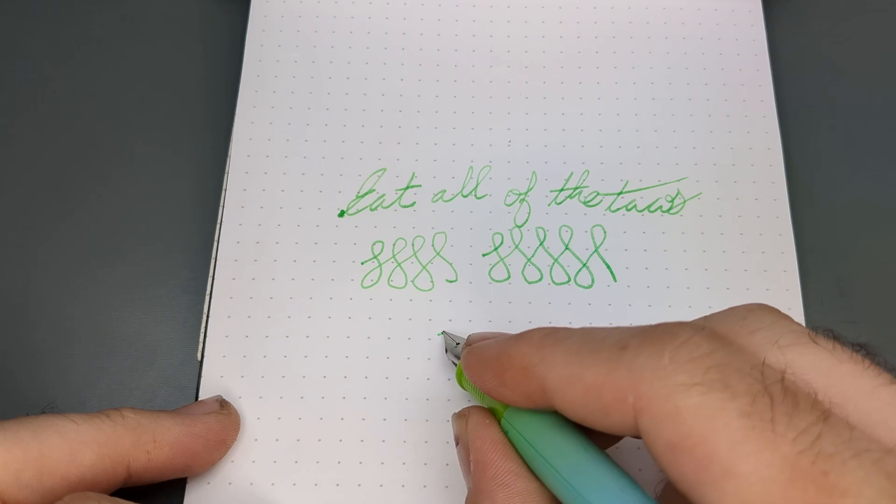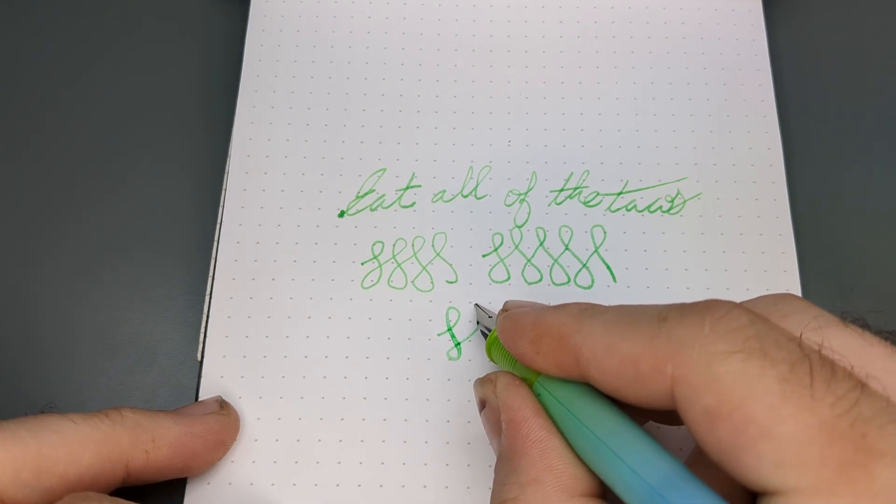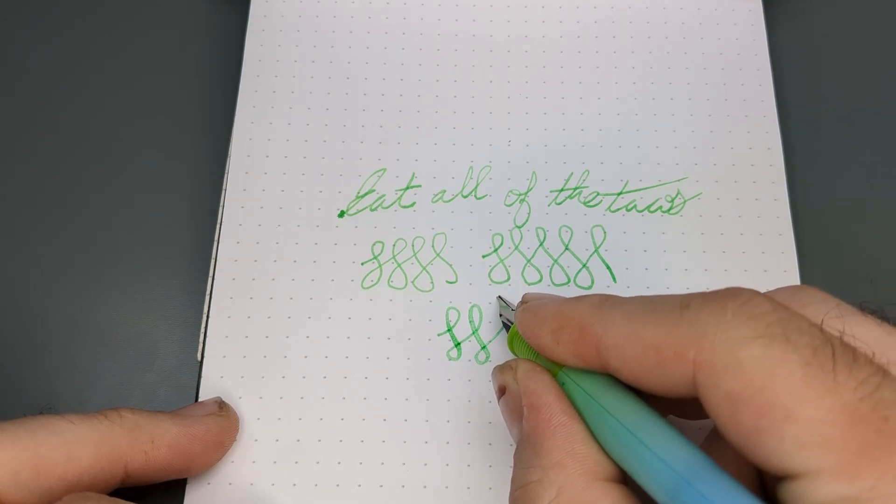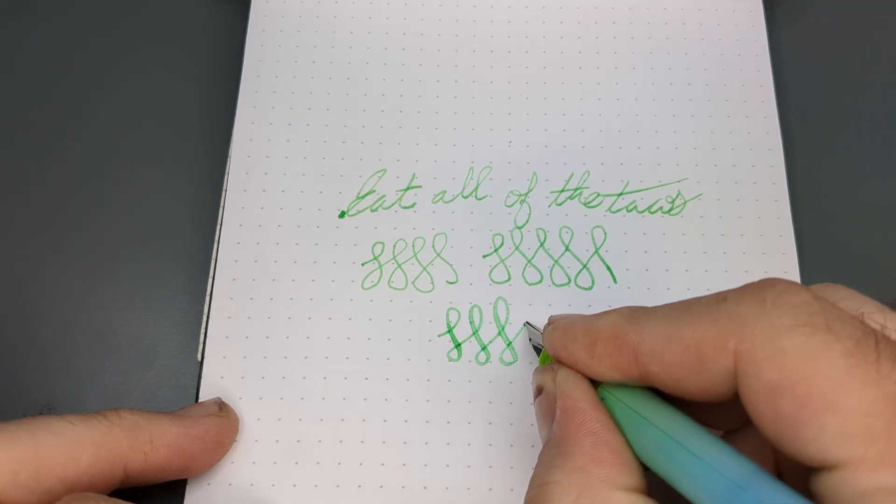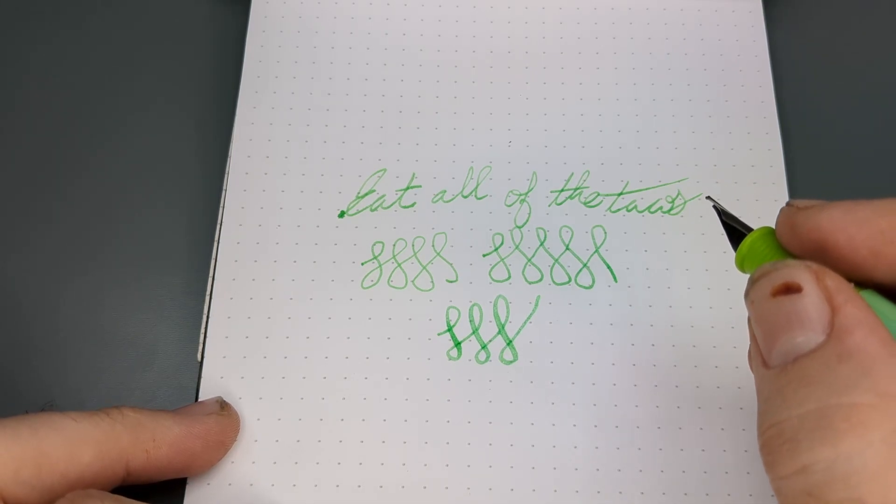Intentionally adding pressure, you can start to get railroading, which is where the line of the ink splits into two as the tines of the nib start to spread. Or the ink can completely stop flowing, depending on how much pressure you are adding.